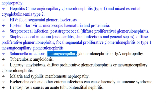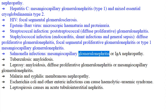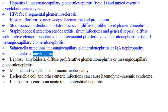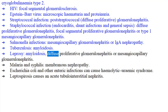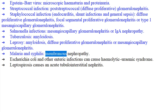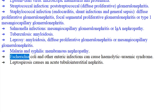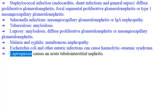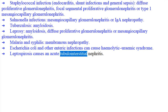Salmonella infections: mesangiocapillary glomerulonephritis or IgA nephropathy. Tuberculosis: amyloidosis. Leprosy: amyloidosis, diffuse proliferative glomerulonephritis, or mesangiocapillary glomerulonephritis. Malaria and syphilis: membranous nephropathy. Escherichia coli and other enteric infections can cause hemolytic uremic syndrome. Leptospirosis causes an acute tubulointerstitial nephritis.